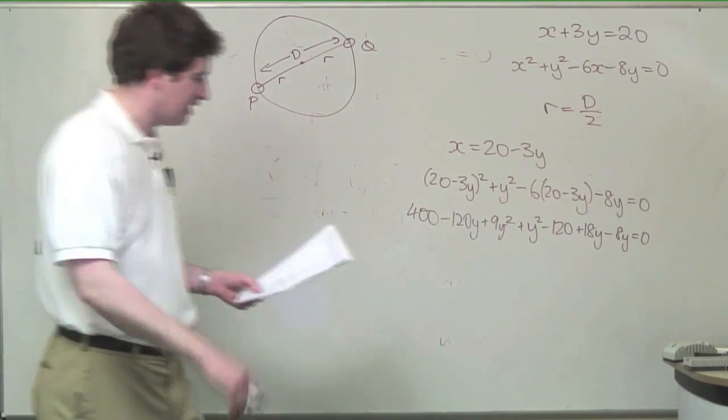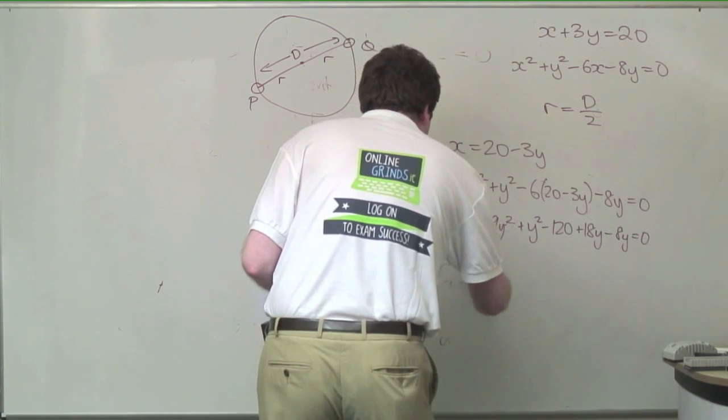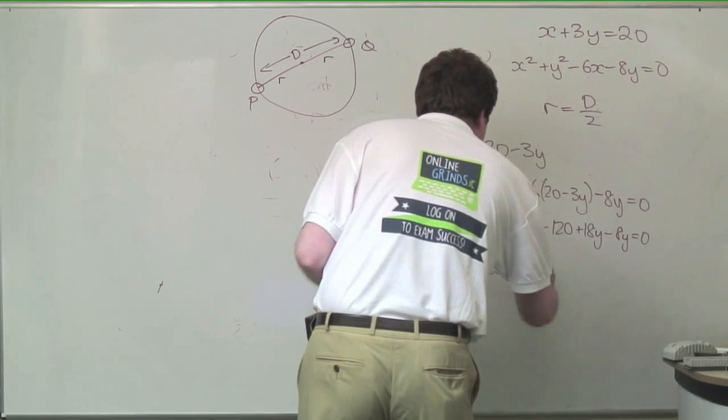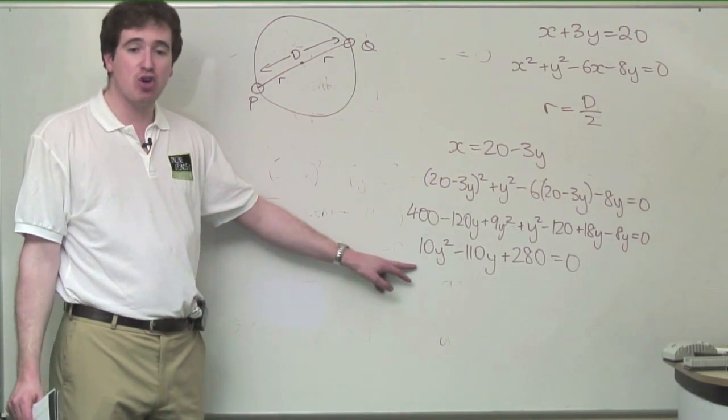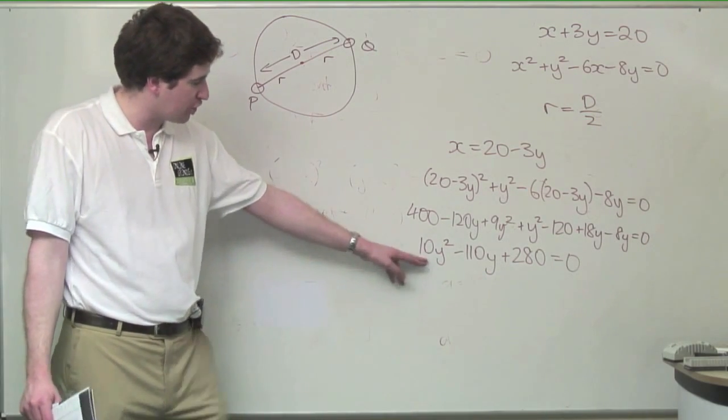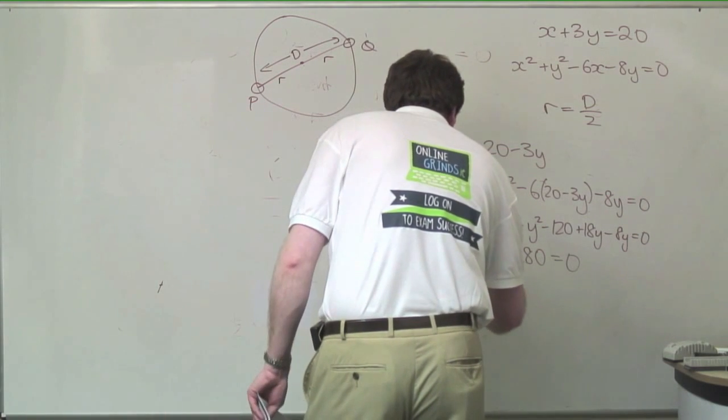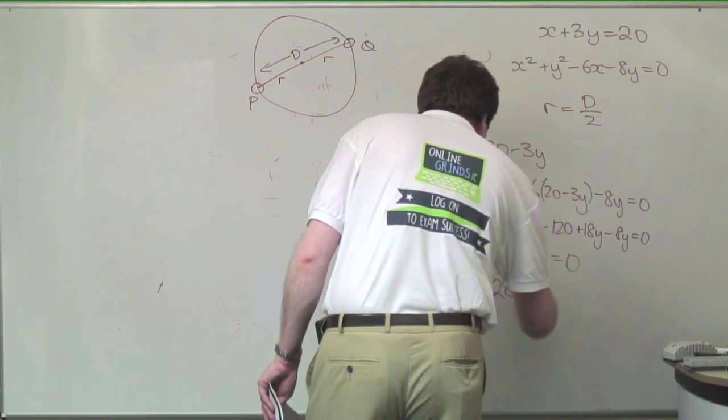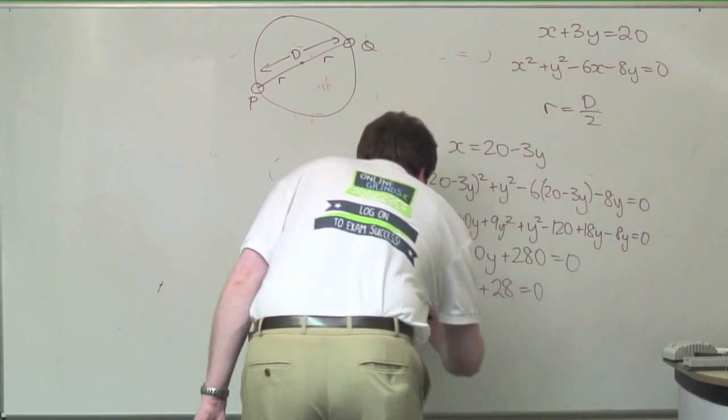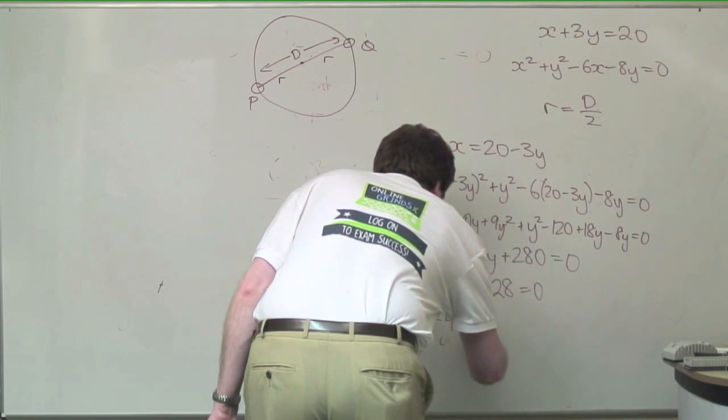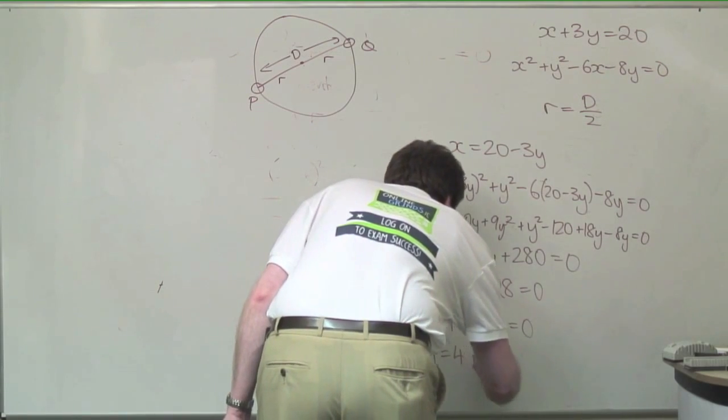Rearranging this equation, I get 10y squared minus 110y plus 280 equals 0. There's no need to be a masochist trying to find awkward factors here. We can simply divide all the terms in this quadratic by 10 to give us an easier equation: y squared minus 11y plus 28 equals 0. I see factors screaming out at me here. We have y minus 4 times y minus 7 equals 0. That gives us y equals 4 or y equals 7.